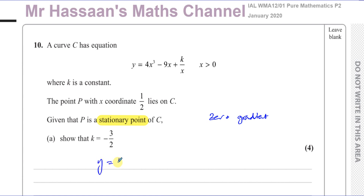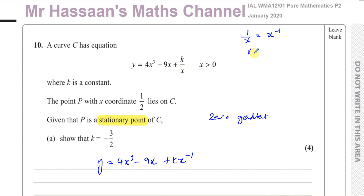So we have y equals 4x cubed minus 9x. Now k over x can be rewritten as k times x to the power of minus 1 to get it ready for differentiation. To prepare something for differentiation, you have to write the x terms in the numerator. We know that 1 over x is the same as x to the power of minus 1, so k over x is k times x to the power of minus 1. That's important — understanding the rules of indices allows us to differentiate and manipulate these expressions.